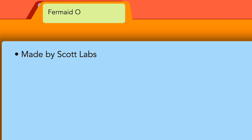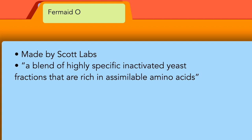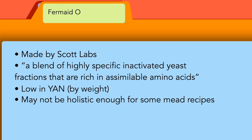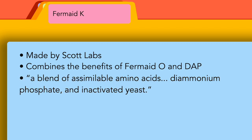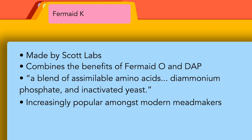FermO: a product manufactured by Scott Labs, described as a blend of highly specific inactivated yeast fractions that are rich in assimilable amino acids, with a low amount of measurable organic YAN. This does not mean it is not an effective nutrient — in fact, it is my primary yeast nutrient. However, in very low YAN musts, like traditional meads, using only FermO may still carry some risk of faults or stalls. FermK is regarded as a relatively balanced in-between of FermO and DAP, because it essentially contains both. It is described by Scott Labs as a blend of assimilable amino acids, diammonium phosphate, and inactivated yeast. For those on the leading edge of yeast nutrition research, FermK is a remarkable engineering accomplishment, but like FermO and DAP, it has its specific place in the mead making world.